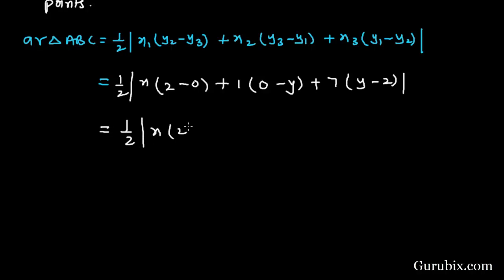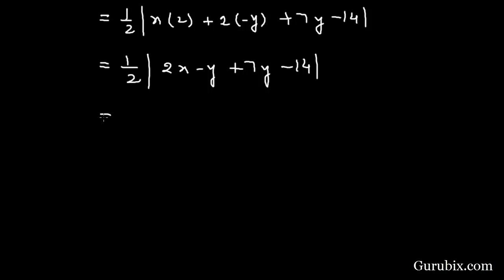Now we shall solve this value. This is 1 over 2 mod x times 2, plus 1 times minus y, here we have 7y minus 14. If we further solve it, this is equal to 1 over 2 mod 2x plus 6y minus 14.